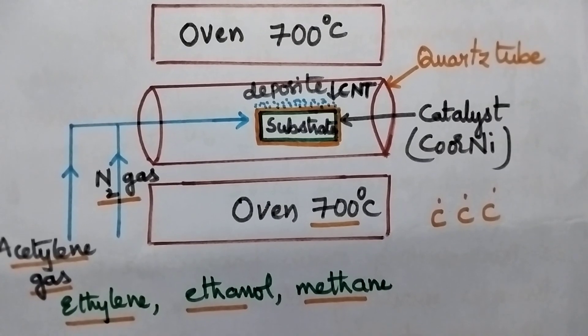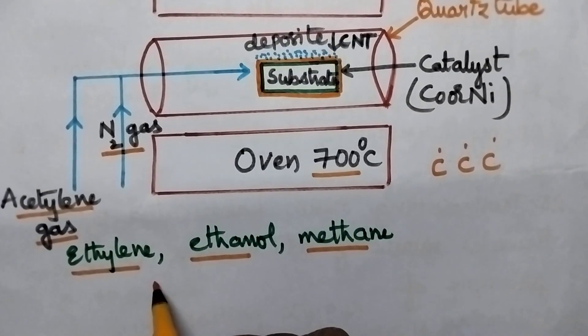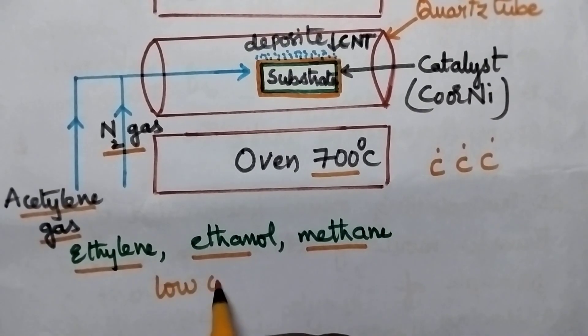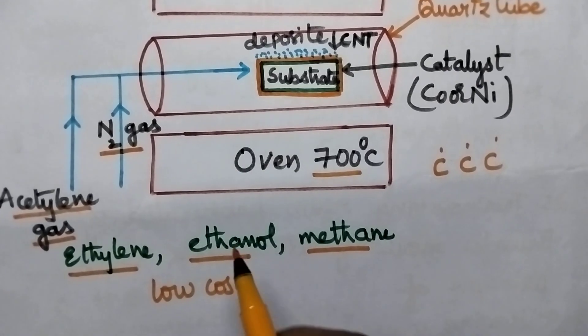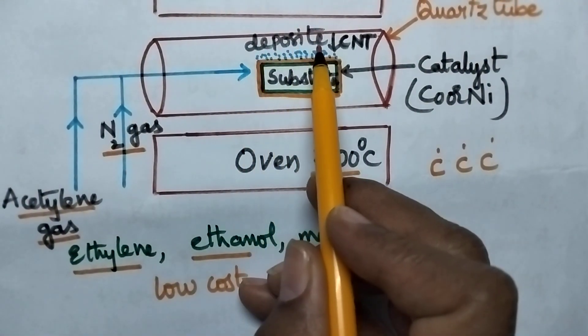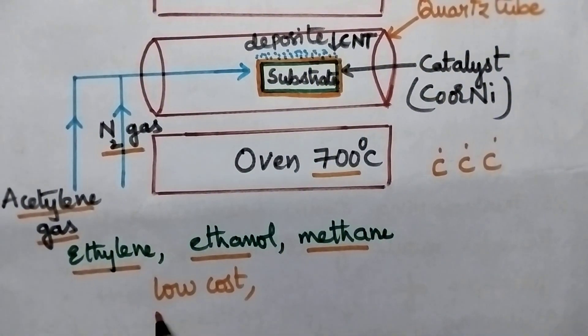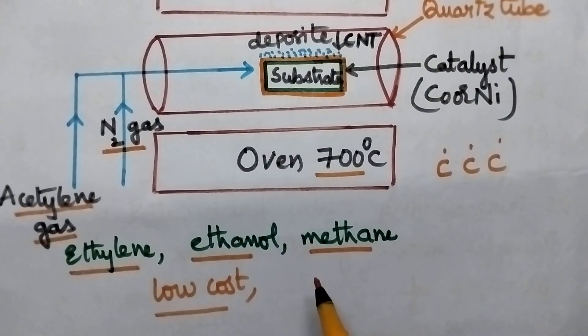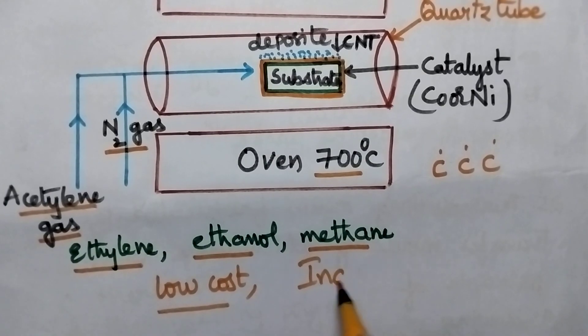This method is highly useful because of the low cost, and also directly the carbon nanotubes get deposited on the catalyst. That's why this method is most widely used for industrial purposes.